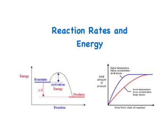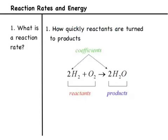These notes are going to include information on reaction rates and energy during chemical reactions. Our first question is: what is a reaction rate? Reaction rate is basically just how quickly the reactants on the left are turned into products on the right — how quickly does that process take place. That's what we call a reaction rate.